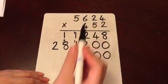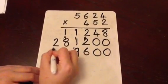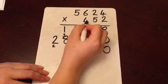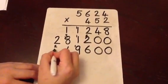4 multiplied by 6 is 24. I carried the 2 across. 4 multiplied by 5 is 20 and the 2 we have carried makes 22.